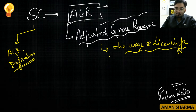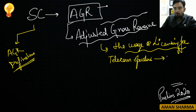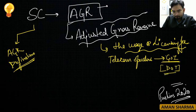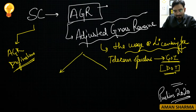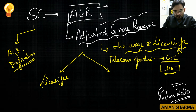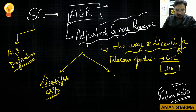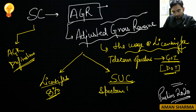This can be divided into two charges. First is the licensing fee, which is around 8% of adjusted gross revenue. Second is the SUC — Spectrum Usage Charge — which is 3–5% of adjusted gross revenue.